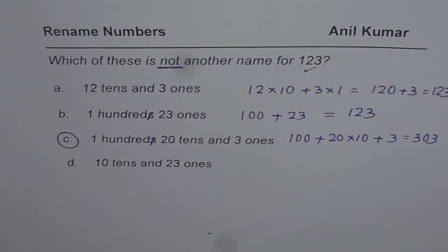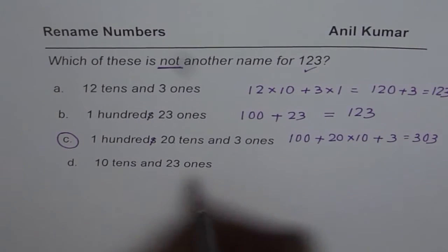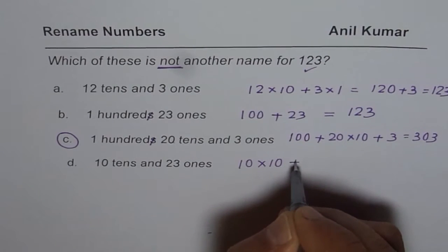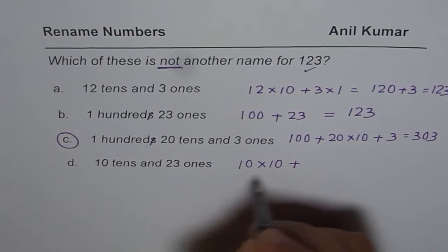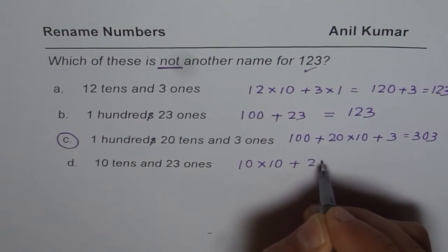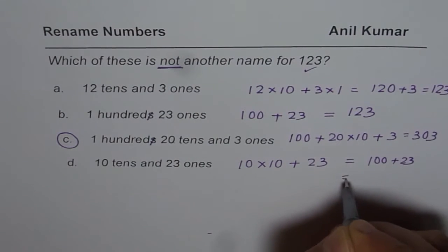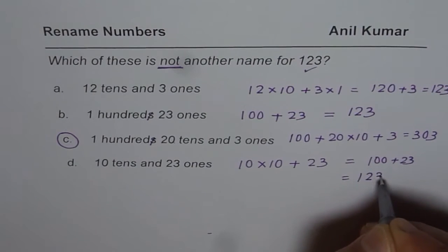So we have got our answer. Let us check the last one also. It says 10 tens, that means 10 times 10, and plus 23 ones. So that gives us 100 plus 23. This is also 123.